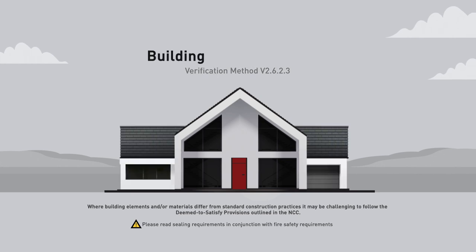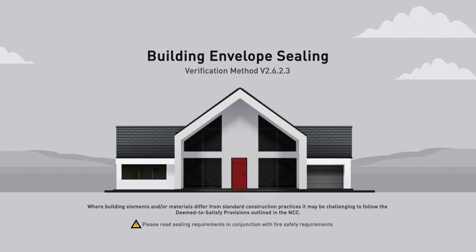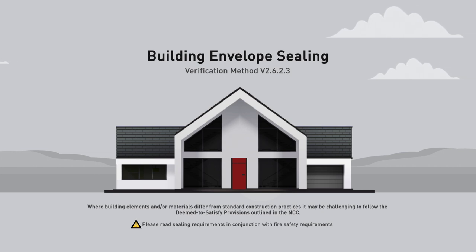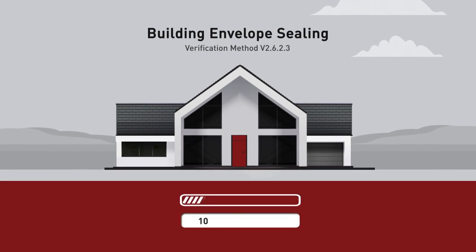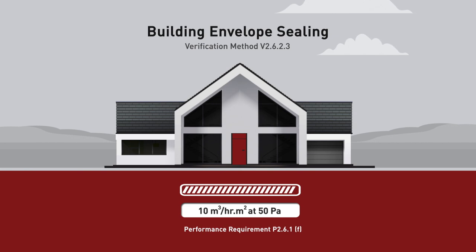The verification method for building envelope sealing is an assessment method that may be used as one such performance solution. It offers flexibility to assist in creating an innovative built environment and allows designers to decide the most appropriate methods of construction for their project. This method demonstrates compliance through practical testing, and the required performance level matches a typical house built in accordance with the prescriptive deemed to satisfy provisions.